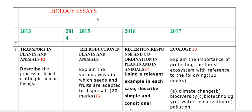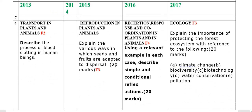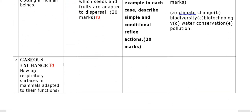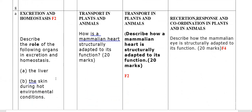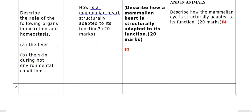Now let us look at the essay questions from 2013 to 2022. In 2013, the essay topic was transport in plants and animals — Form 2 work — and the question was: describe the process of blood clotting in human beings. Part B was gaseous exchange: how are the respiratory surfaces in mammals adapted to their functions? That was number 7B. Number 8 was excretion and homeostasis: the role of the following organs in excretion — the liver, the skin during hot environmental conditions.